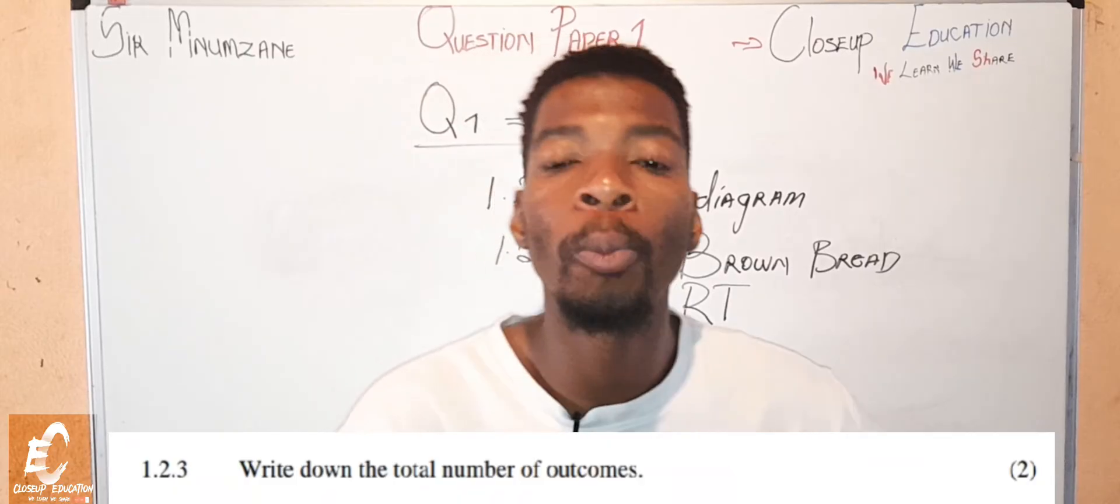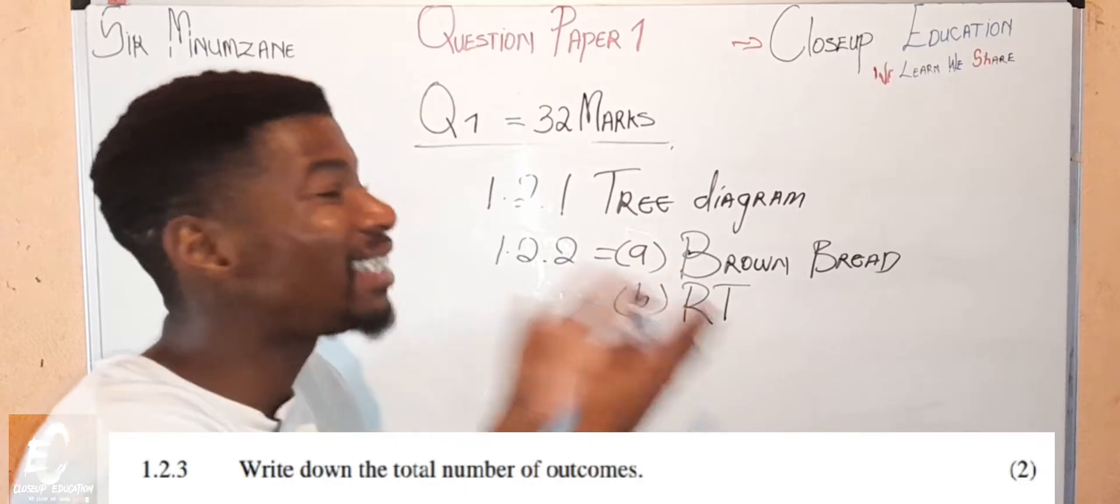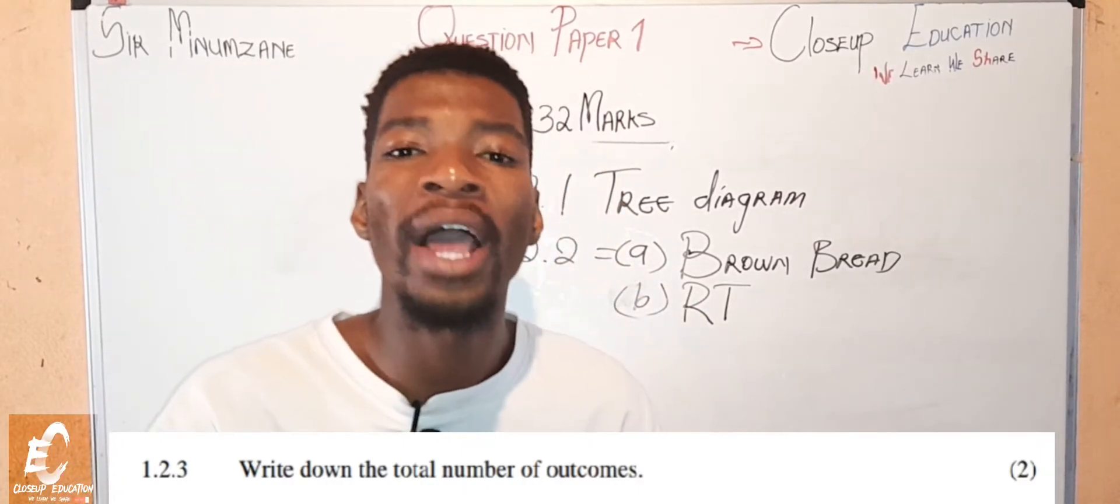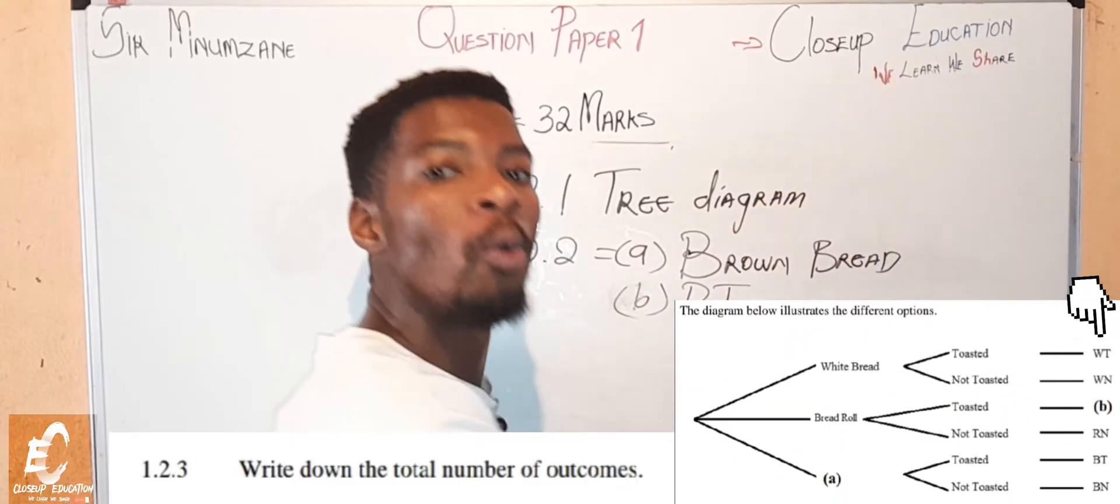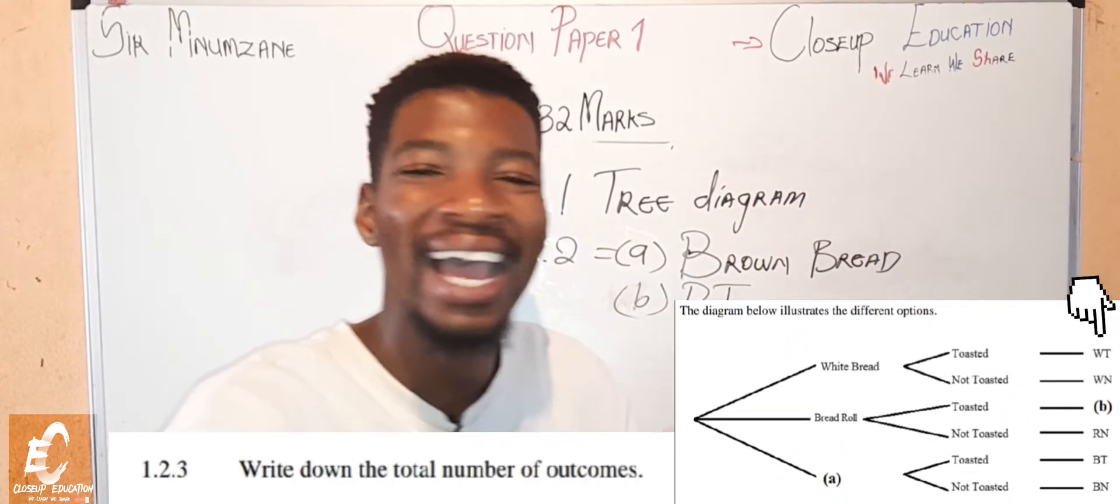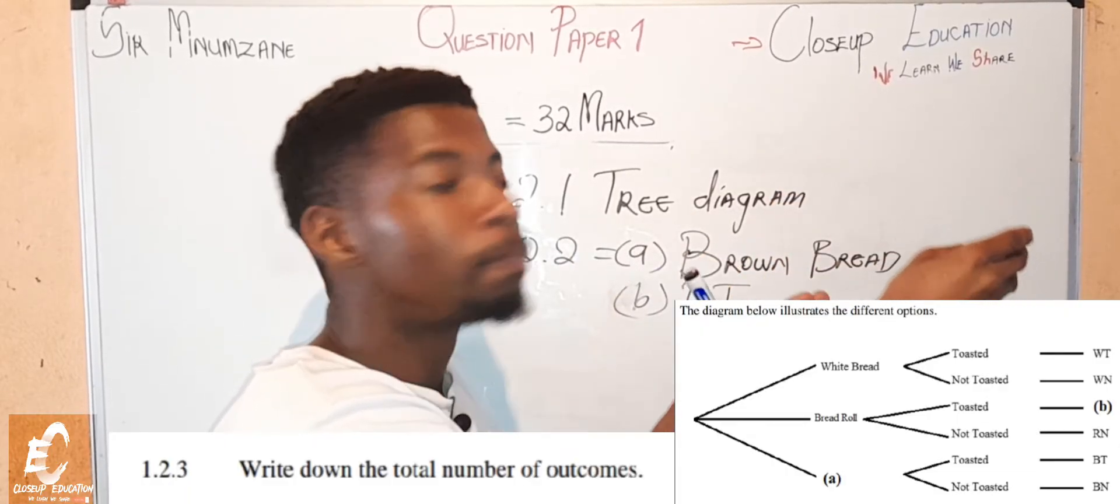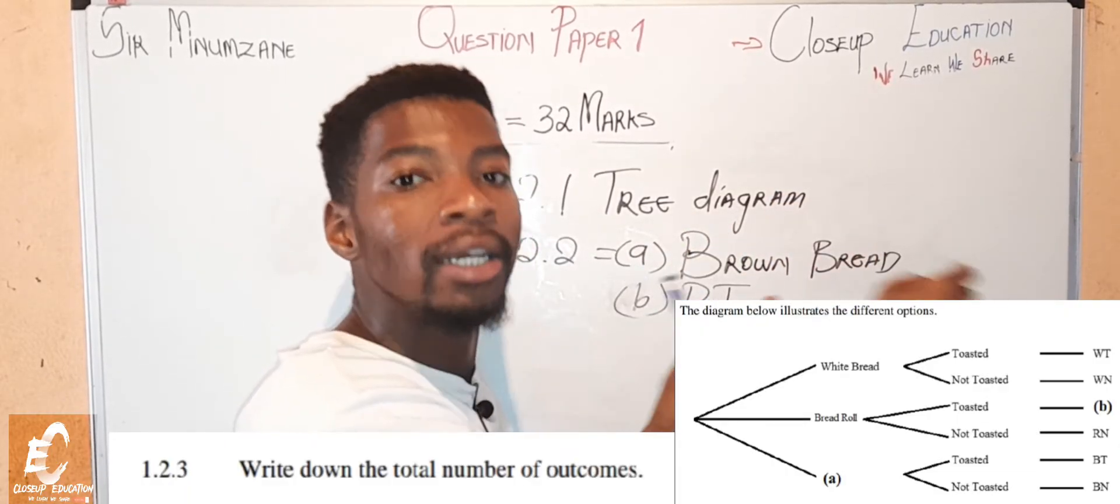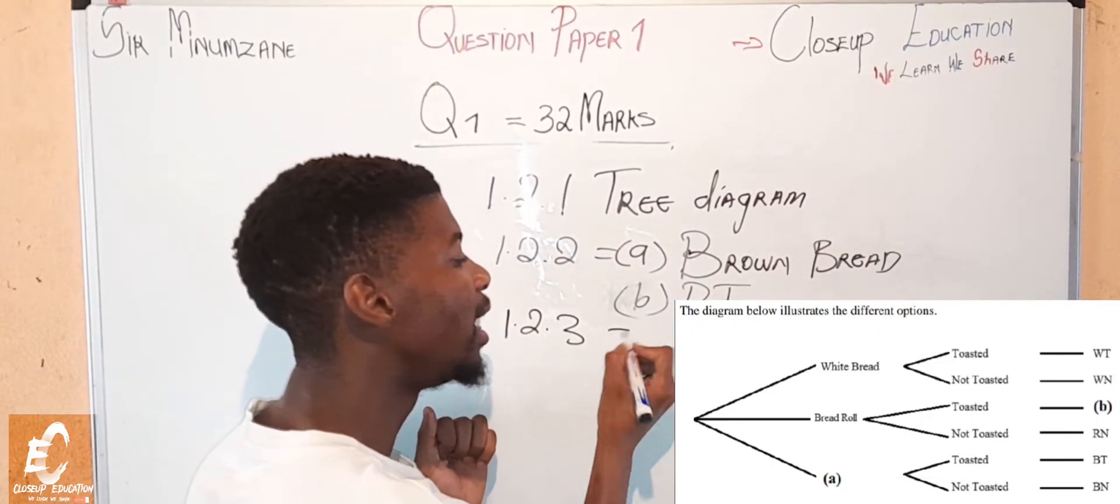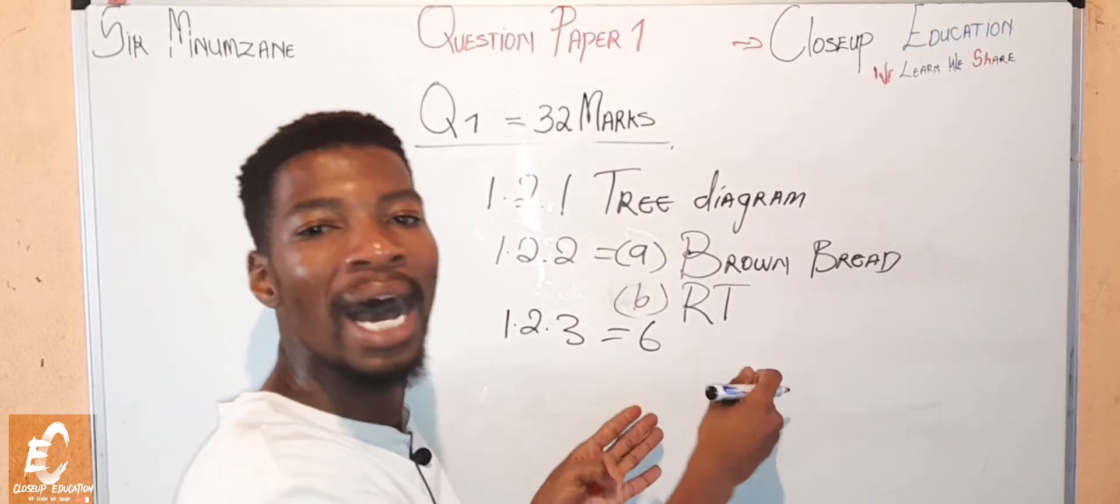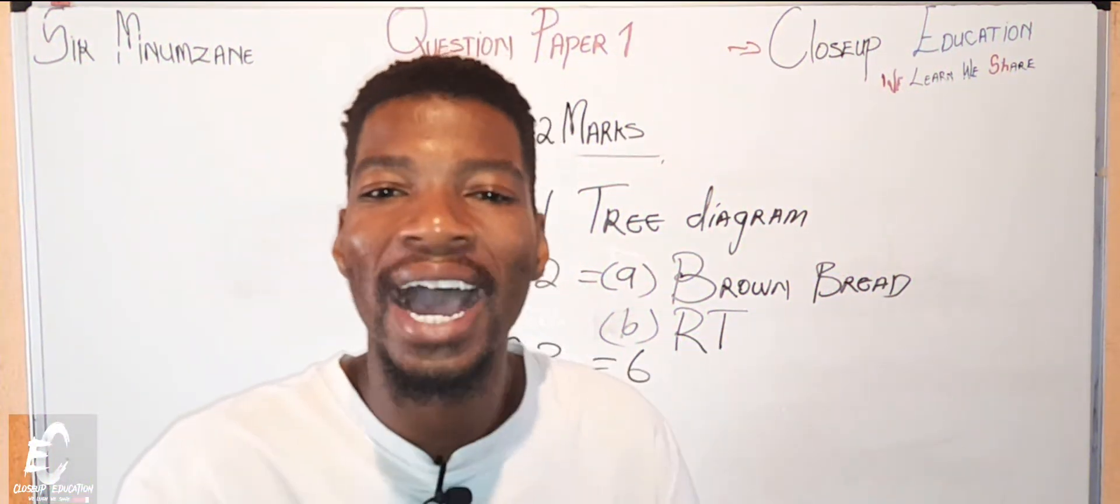Let's move to question 1.2.3. The question says what is the number of outcomes that will be found on that tree diagram? We know very well that the outcomes are found on the last row when we are looking at the tree diagram. So we are going to count those: WT, WN, until the end. And that is going to give us 1.2.3, and that is six outcomes. This is your two marks. Guys, you don't understand how nice question one is.